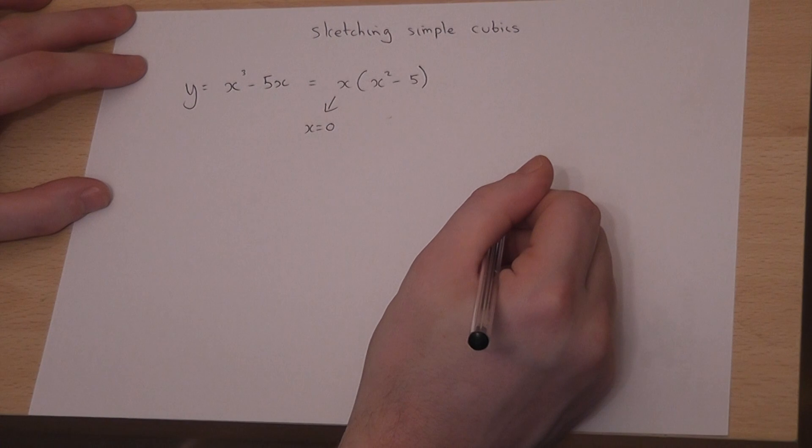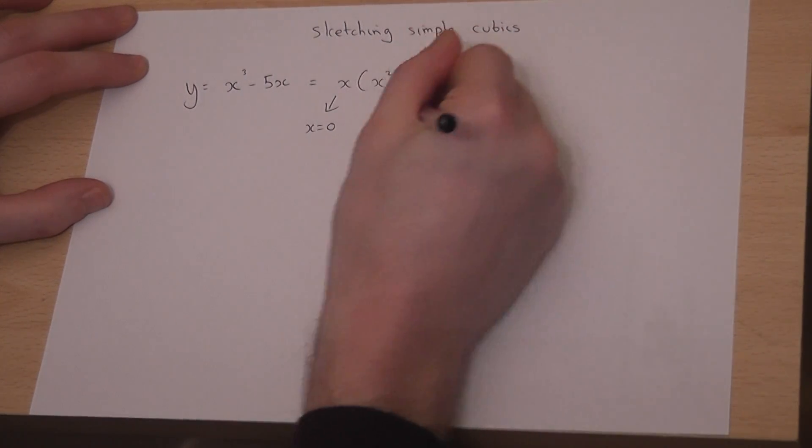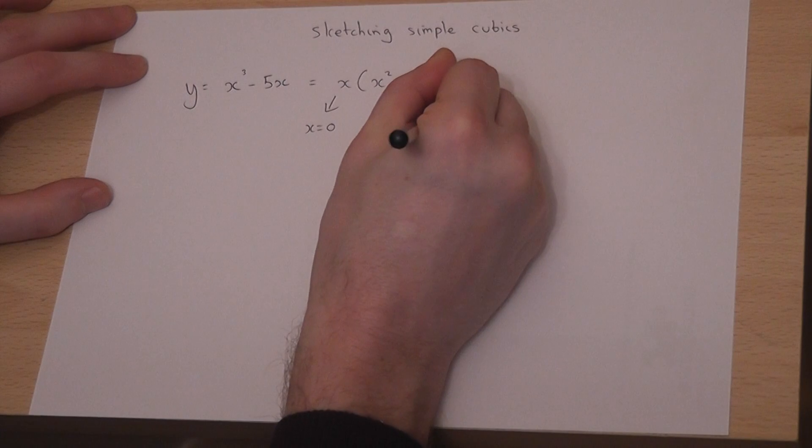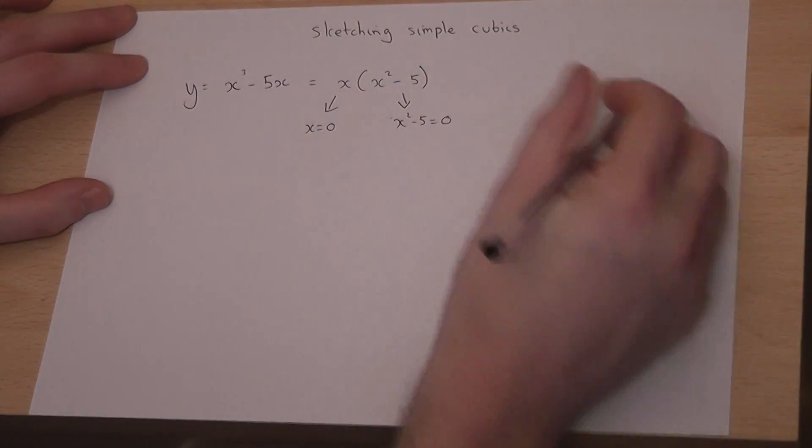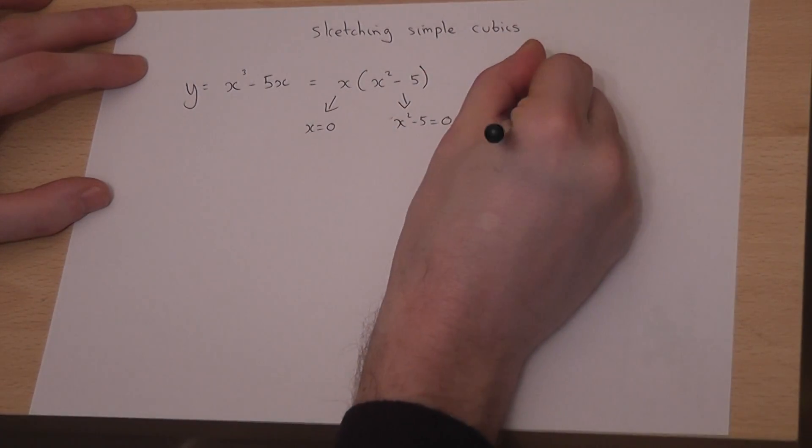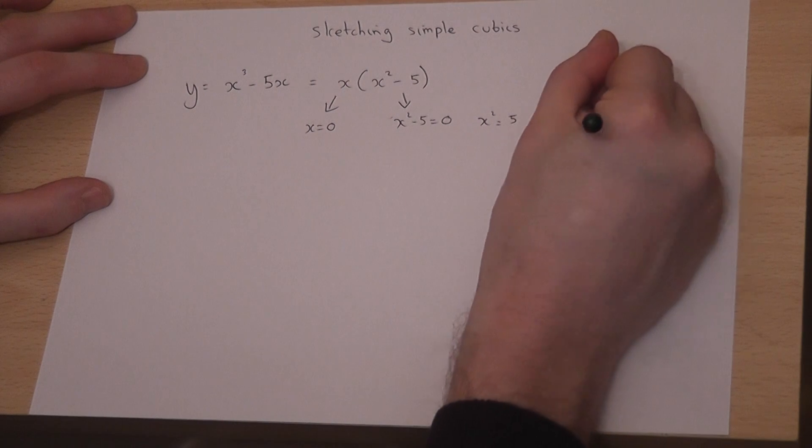or it's where x squared minus 5 equals 0, which is where x squared equals 5, so x equals plus or minus the square root of 5.